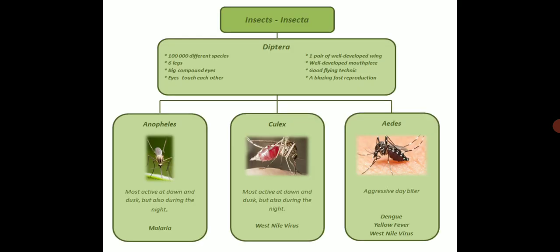When you differentiate between the 3 important species — that is Anopheles, Culex and Aedes — Anopheles and Culex are active during dawn and dusk but also active during the night, whereas the aggressive day biter is Aedes.